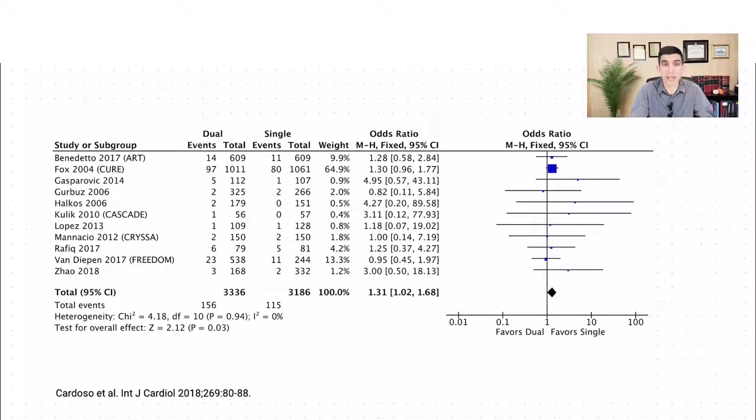Well, each line represents the results of any given study. So for example, in this case, Lopez 2013 had one outcome out of 109 patients in the dual antiplatelet therapy group. And then in the single antiplatelet therapy group, there was one patient with the outcome among 128.